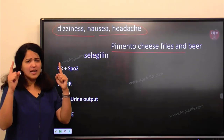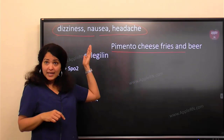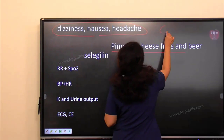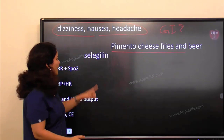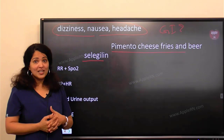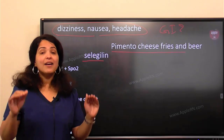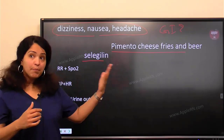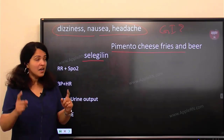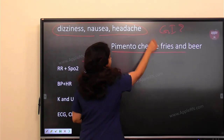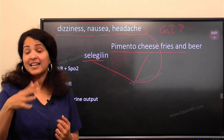Is it a GI problem — did his stomach get upset from the food? That's something to think about. But what else is the clue? The client is taking selegiline. Now I'm thinking: what could happen if a client on selegiline is eating pimento cheese fries and beer? What is the connection? We need to connect the dots — that's critical thinking.